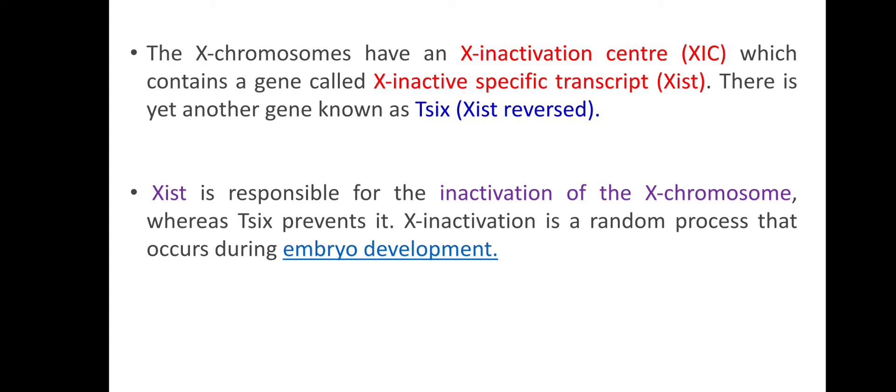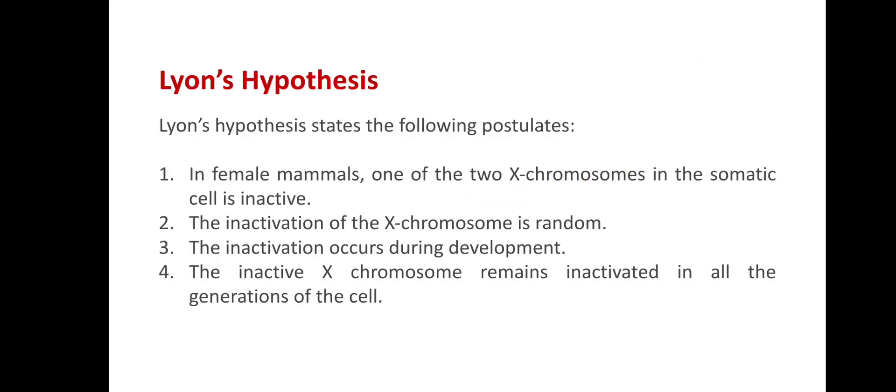X chromosome inactivation is a random process. The Lyon hypothesis has the following postulates: First, in female mammals, one of the two X chromosomes in the somatic cell is inactive. Second, this inactivation of the X chromosome happens randomly during early embryonic development. Third, the inactive X chromosome remains inactivated in all subsequent generations of that cell — so if the cell divides, the same X chromosome remains inactive. Thus, one active X chromosome is present in each female somatic cell.